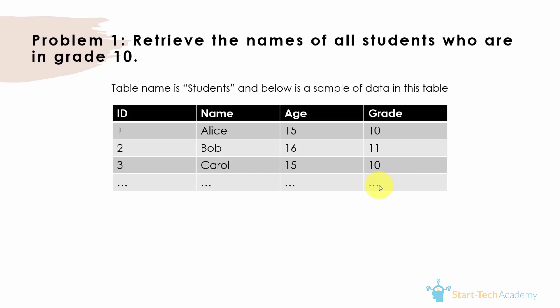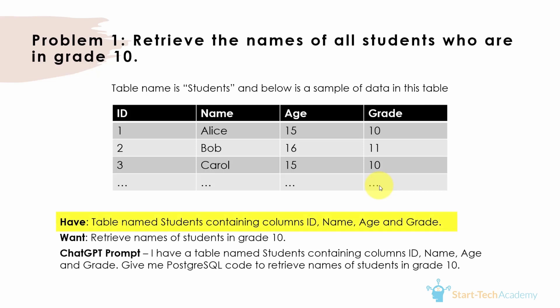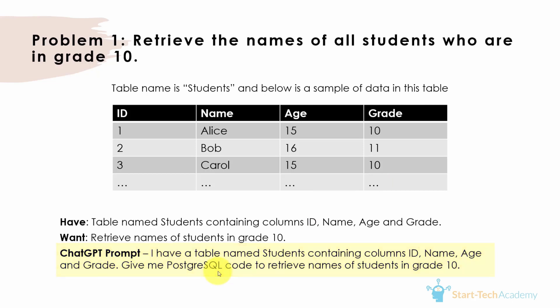When you want to get SQL code from ChatGPT, I suggest you structure your prompt by first identifying what you have — a table named students containing columns id, name, age, and grade — and then what you want to do: retrieve names of students in grade 10. Combine these two statements into your prompt. Specifying which SQL dialect you are using is also important so ChatGPT gives you the correct syntax. Here I've written PostgreSQL; if you're using MySQL, specify that instead.